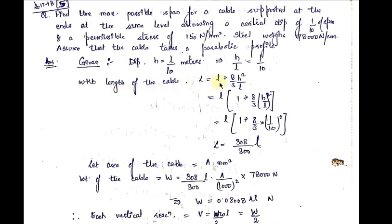The length of the parabolic cable is L + 8H²/3L. Taking L as common inside the bracket and substituting H/L = 1/10, we get the total length of the cable as (308/300) × L, where small L is the span of the cable.